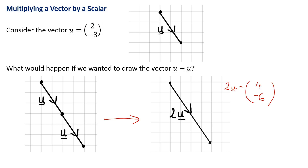So if we wanted to work out 2u, knowing that u is (2, -3), then 2u we would write as 2 lots of (2, -3). So this 2 here is a scalar — it multiplies both the x and the y component. And that's how we can get to our final answer. We've doubled the length of the journey; (2, -3) has become (4, -6).